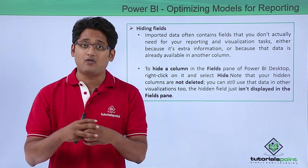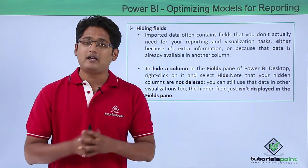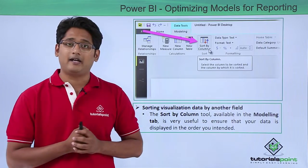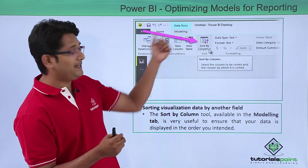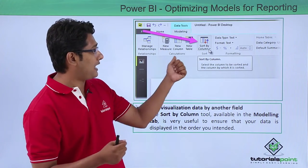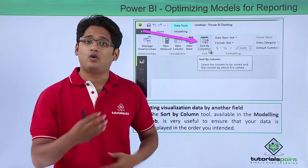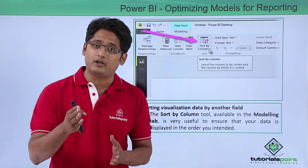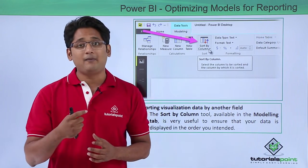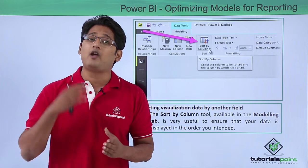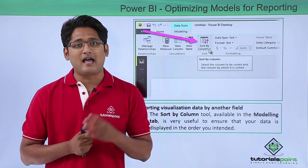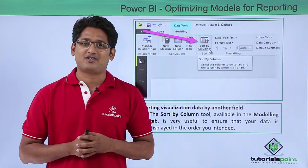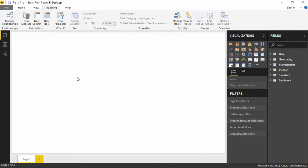Hidden columns will not be included when creating or generating any kind of report. The second thing we can do is sort the data. Under the Modeling tab there is an option that allows us to sort by column. If your dataset is not in the proper order you intend, you can use this sort button to sort data according to your own need. We will get a better understanding of this in our practical approach.